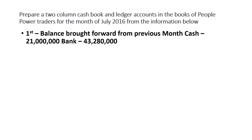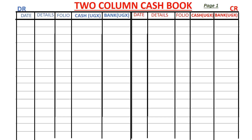July 1st, balance brought forward from the previous month. This means the business was operational. From the previous month we have balance brought forward: $21 million for cash and $43,280,000 for bank. Since bank and cash normally have debit balances, we go to the debit side of the 2-column cash book and put the $21 million in the cash column and $43,280,000 in the bank column on the debit side. These are the balances brought down from the previous session on the 1st of July.